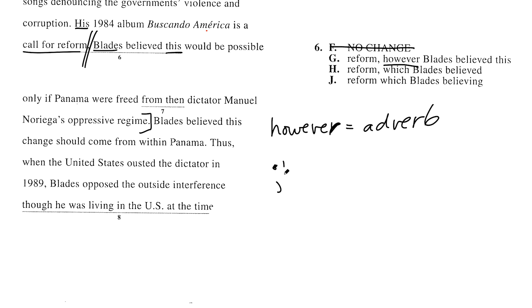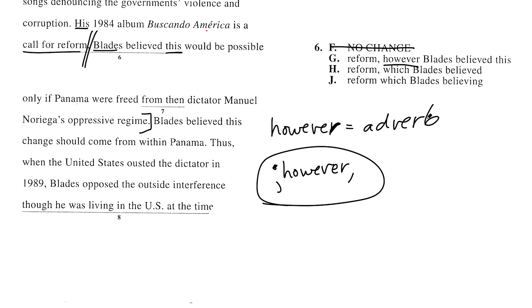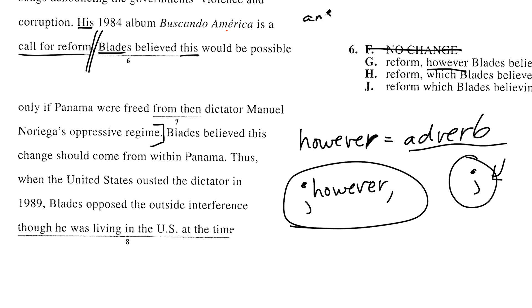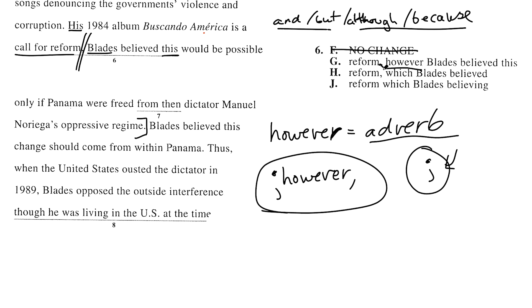If you do use however, the proper way to use it mid-sentence like this is: semicolon, however, comma. I get into this in more detail in our semicolons video. But briefly — however doesn't work because it's an adverb. What you actually need is a conjunction. Conjunctions are words like and, but, although, or because. These are coordinating and subordinating conjunctions. Whichever way you dice it, you need a conjunction if you're going to have a comma. Here we only have a comma, and if we had semicolon-however-comma, that would be fine — but we do not.